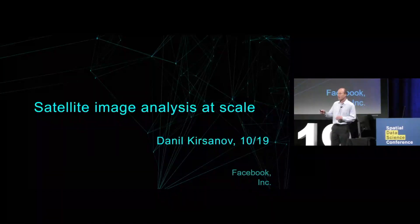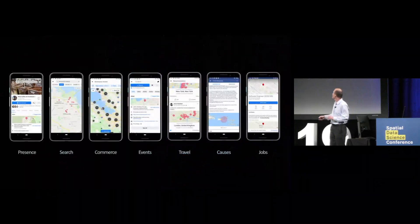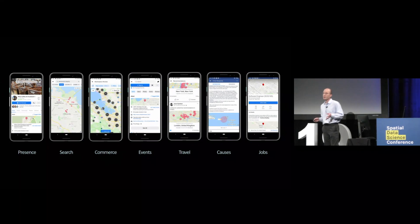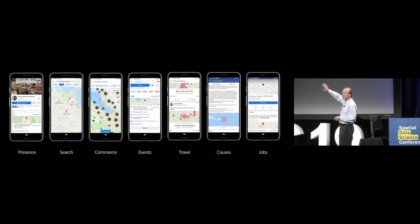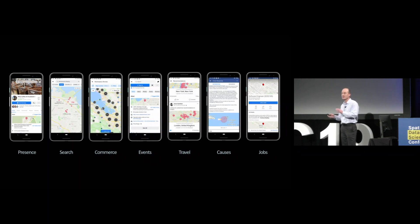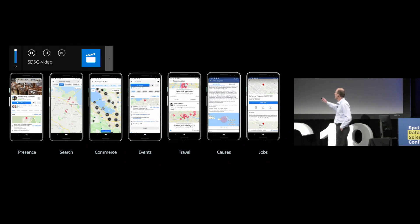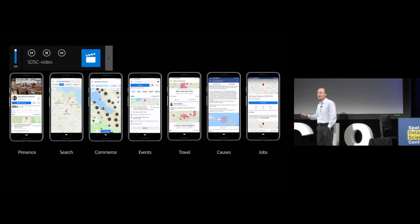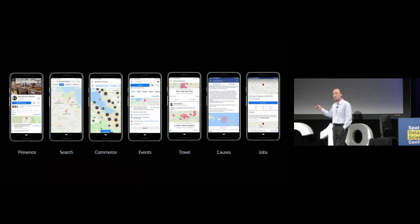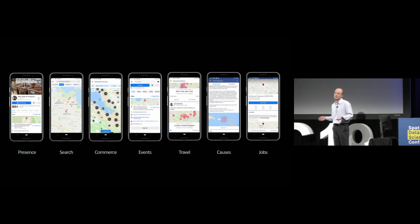First of all, why satellite images on Facebook? It turns out if you're using your Facebook app, very often you see that we show the map in the background. You can do it for events, you can do it when you sell something in the marketplace. This map nowadays comes from the project called OpenStreetMap, that was mentioned here several times before. And what we need at Facebook is a high-quality, renderable map pretty much everywhere in the world.